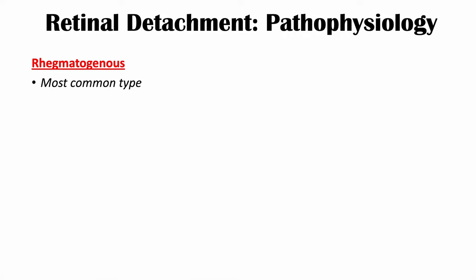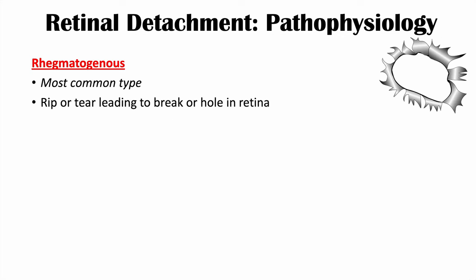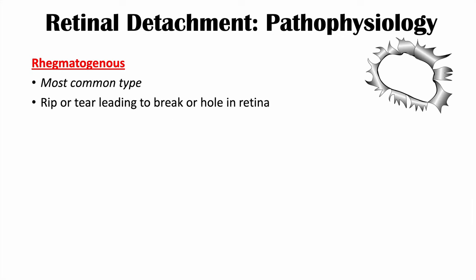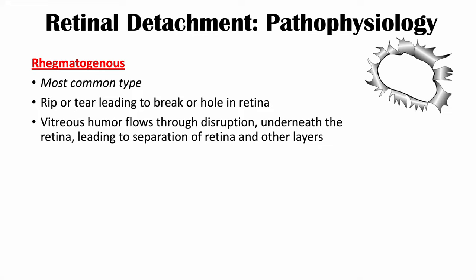Let's talk about the pathophysiology behind retinal detachment. Each type has a different pathophysiology. The first and most common type is regmatogenous, which involves a rip or tear leading to a break or hole in the retina. This allows the vitreous humor — the clear gel-like fluid filling the eyeball — to flow through the disruption, get underneath the retina, and cause it to pull away and separate from the underlying layers.